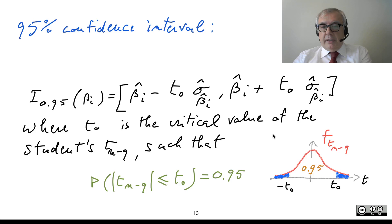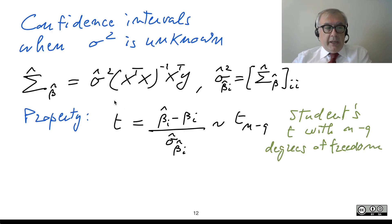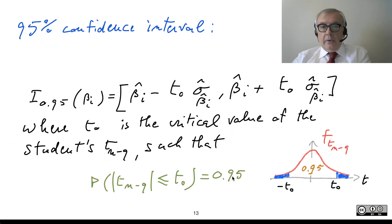The expression of the confidence interval is very similar to the expression when you know sigma-square. There we had the point estimate plus or minus 1.96 times the standard error. Now we have the point estimate with t0 in place of 1.96, and the estimated standard error — because we do not have the true value of the standard error.